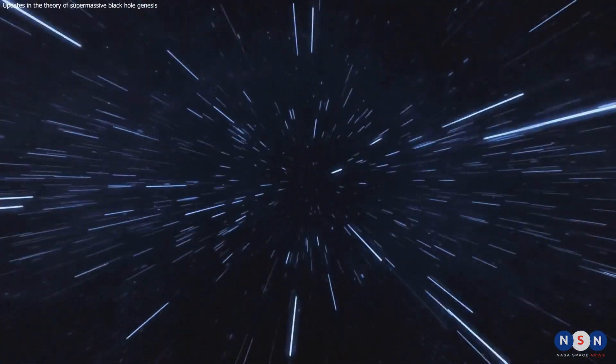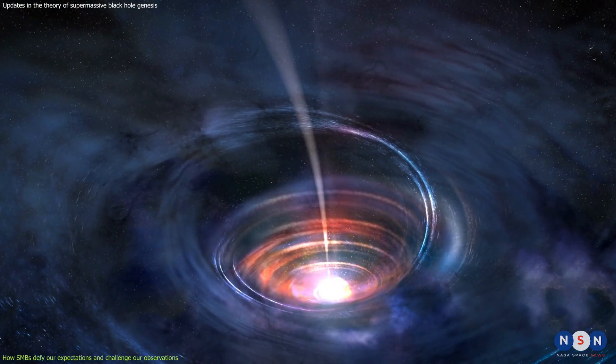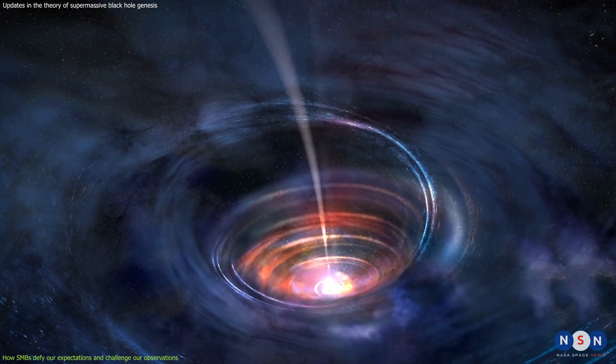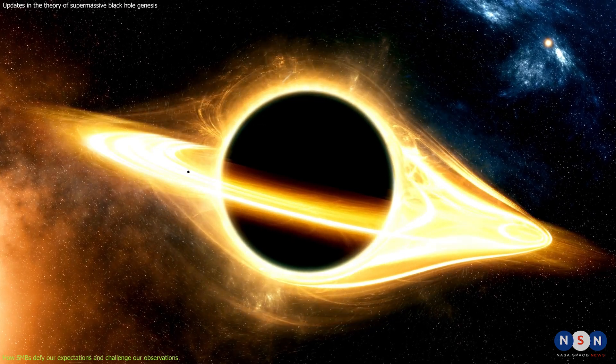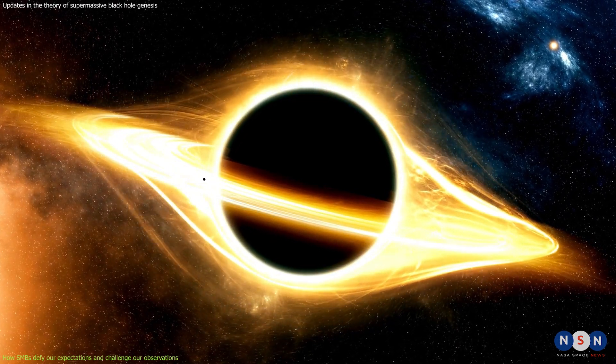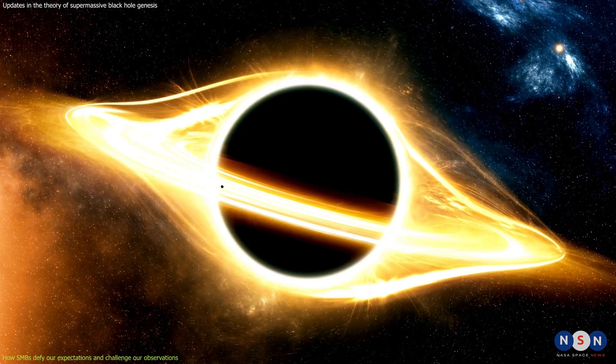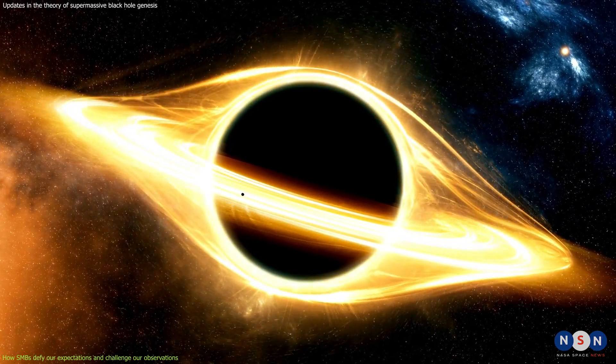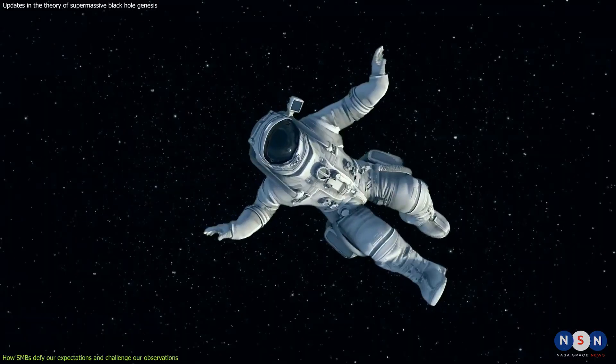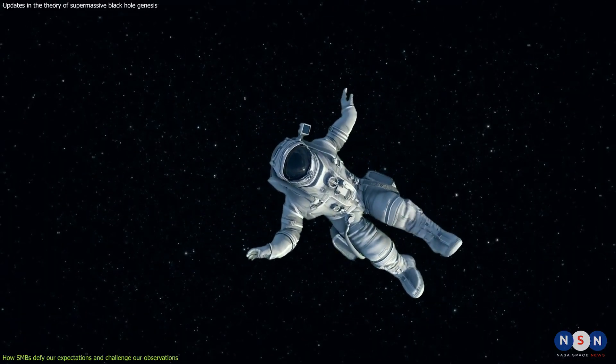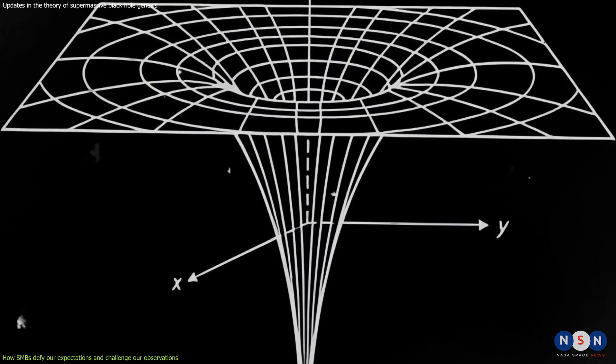Before we dive into the new study, let's review some of the basics of supermassive black holes and why they are so fascinating and mysterious. As you probably know, a black hole is a region of space where gravity is so strong that nothing, not even light, can escape from it. The boundary of a black hole is called the event horizon, and anything that crosses it is doomed to fall into the singularity, the point of infinite density and zero volume at the center of the black hole.